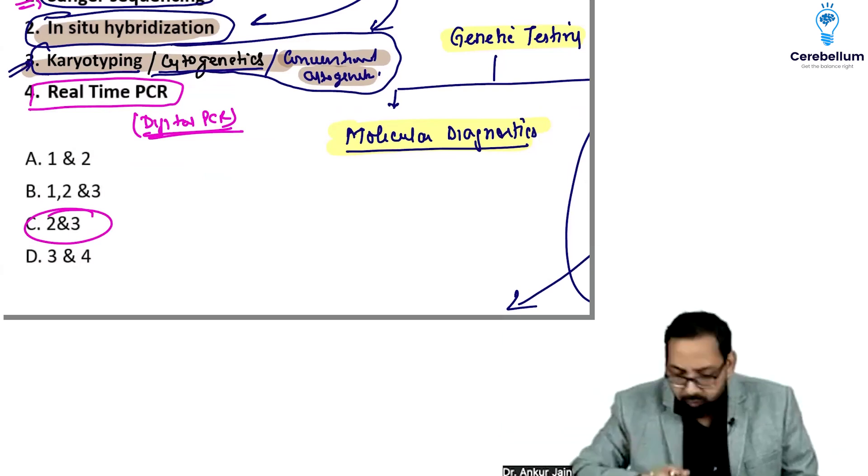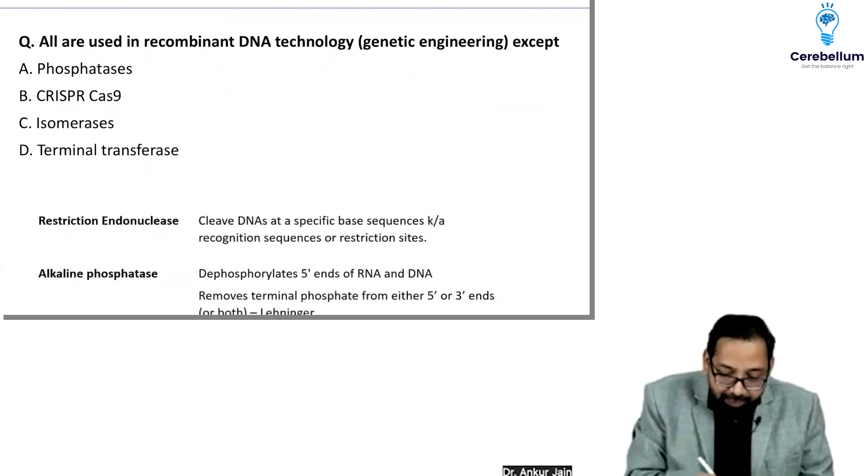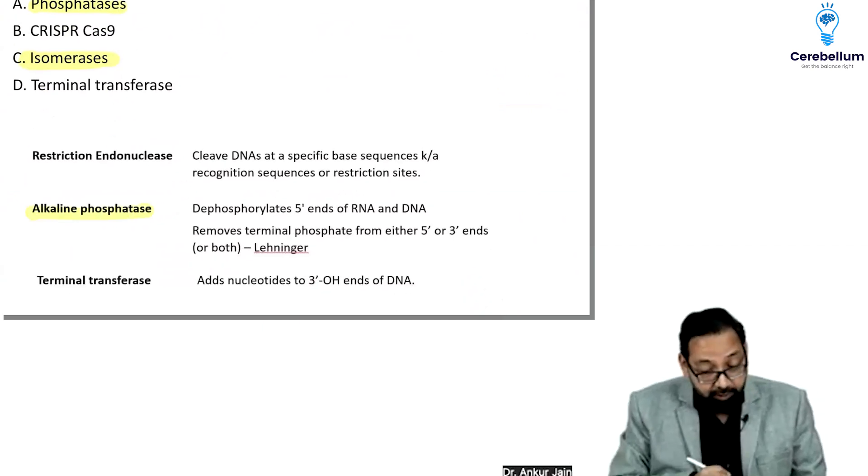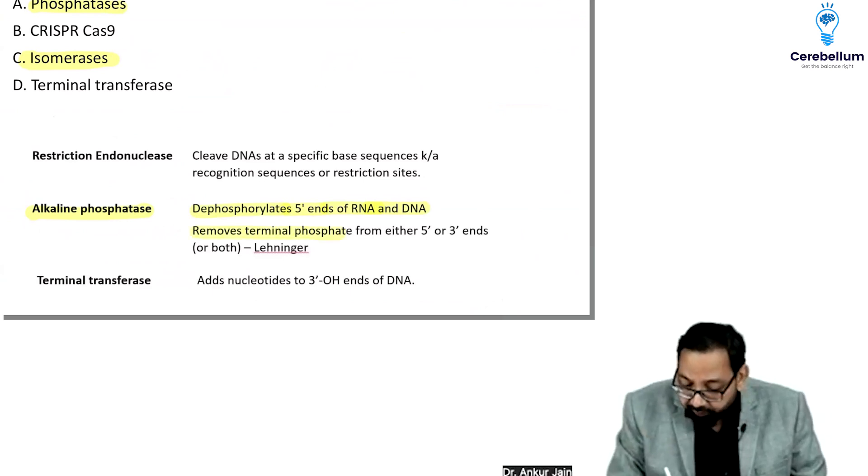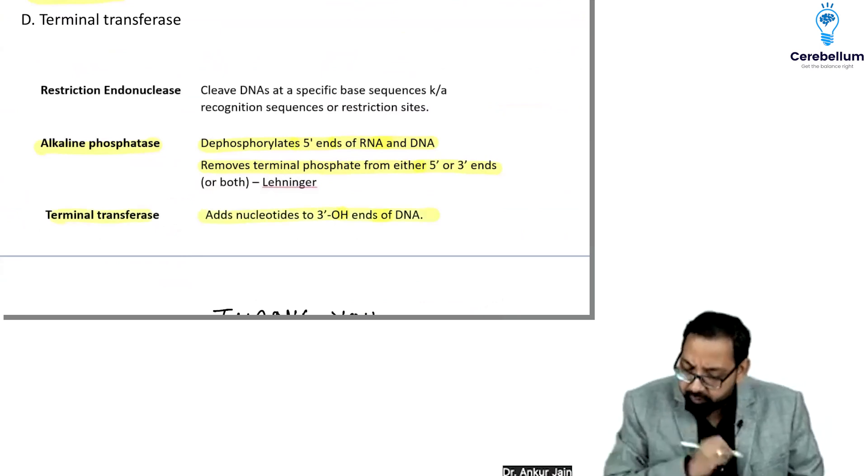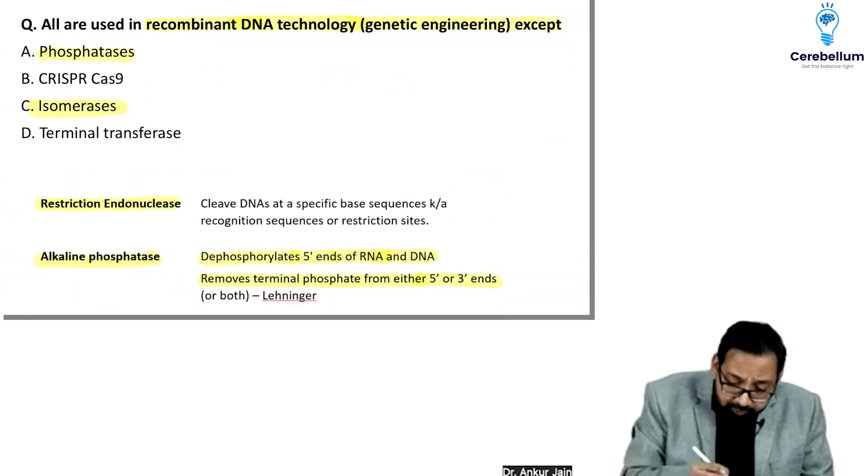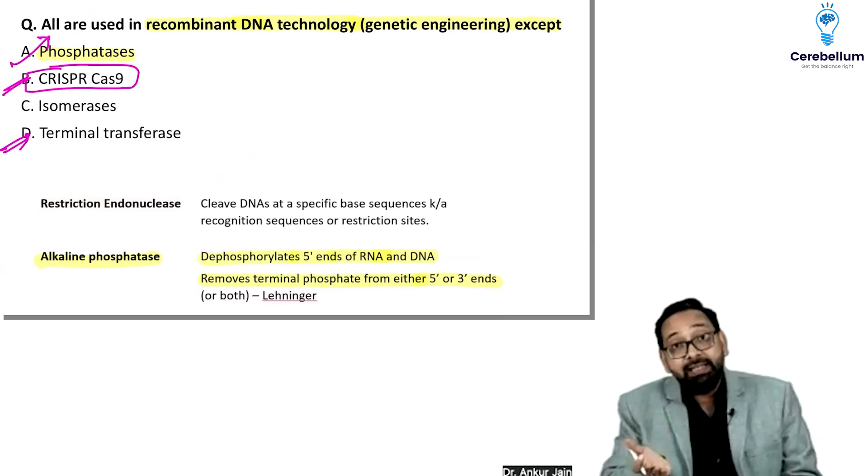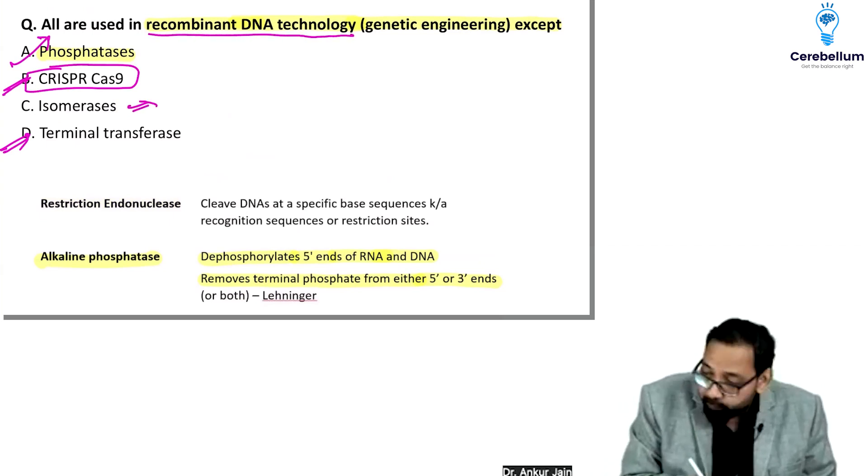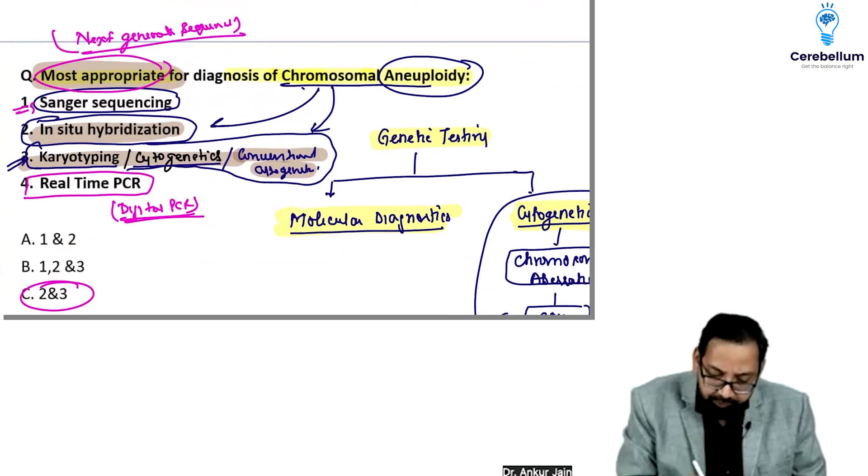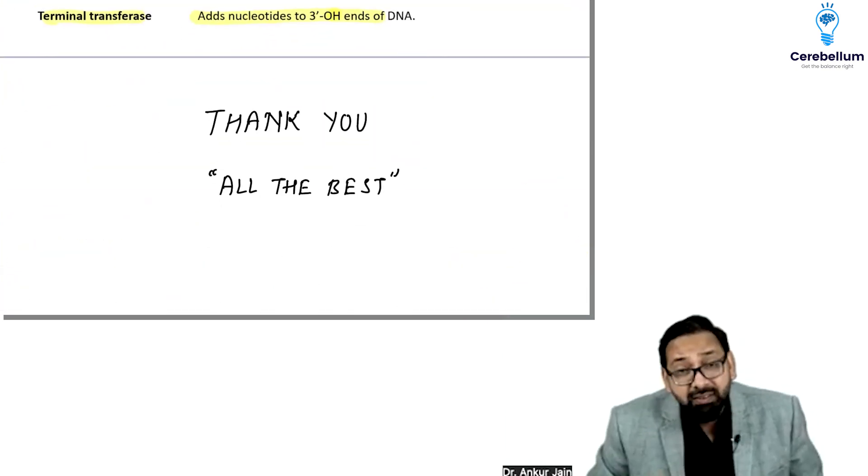Simple question: isomerase is not used in recombinant DNA technology or genetic engineering. Phosphatase or alkaline phosphatase dephosphorylates 5' end of RNA/DNA, removes terminal phosphate from either 5' or 3' ends. Terminal transferase adds nucleotides to 3' end of DNA. Restriction nuclease we use. CRISPR-Cas9 is for DNA editing and is used in recombinant DNA technology. Answer is isomerase. In this, I prefer to go with second and third as most appropriate. Thank you, all the best, take care.